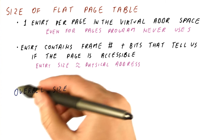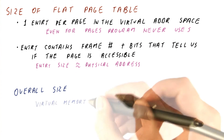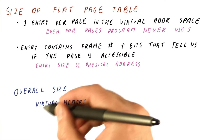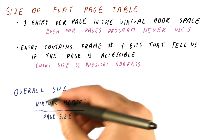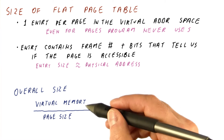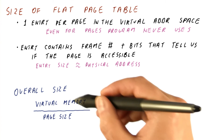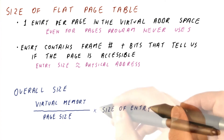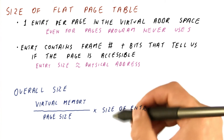So the overall size of a page table is the overall size of the virtual memory of a process divided by the page size — this is how many entries we have in the page table — times the size of a page table entry.